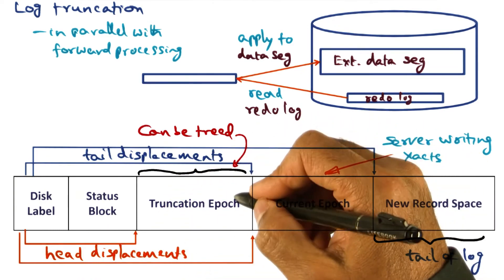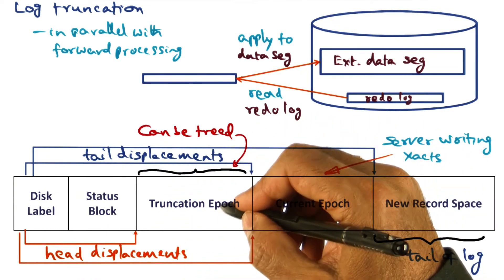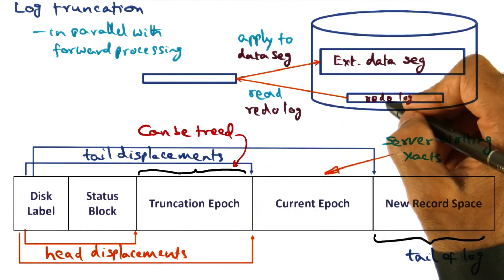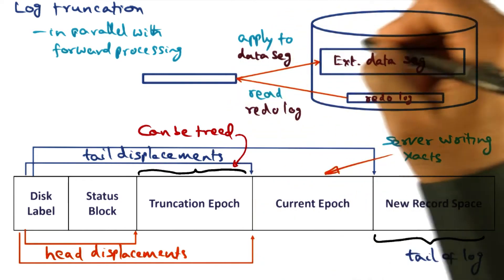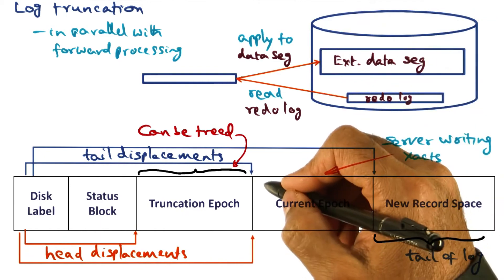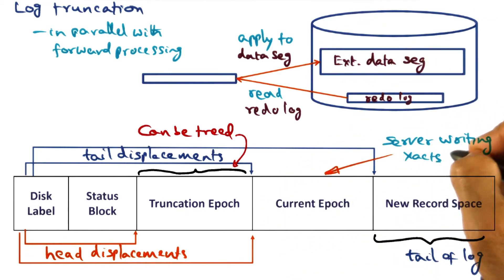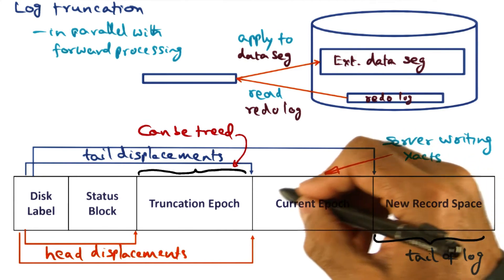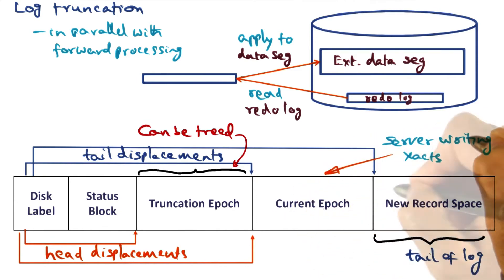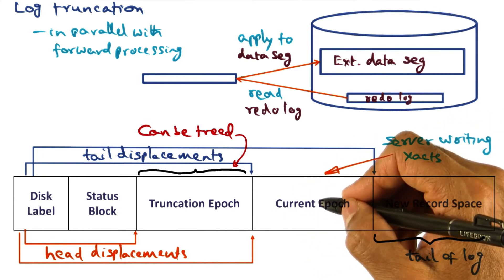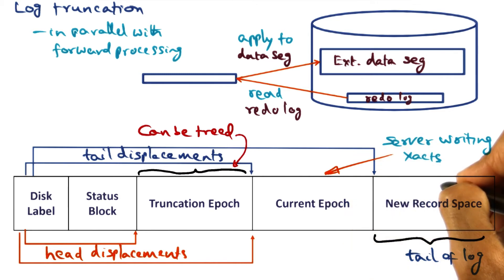It says this is a portion of the log record that I've chosen to clean up, and this is a truncation epoch. And so this is the part that I'm going to use to read from the disk and apply to the external data segment. And in parallel with that, I'm going to allow the application to make changes. This is the current epoch where the application is making changes to the log record. And this is a new record which is not yet being used.